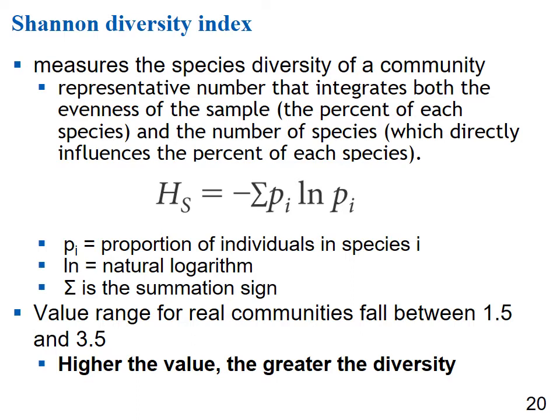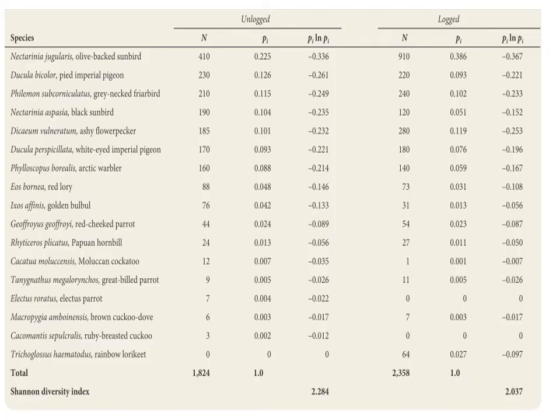In ecology you'd calculate this index, but here just examine a table comparing species in an unlogged versus a logged forest. You can probably guess the unlogged forest is more diverse — and the math confirms it: Shannon diversity index of 2.284 for the unlogged forest versus 2.037 for the logged forest.